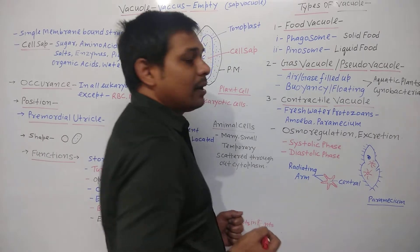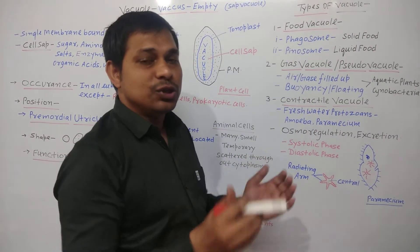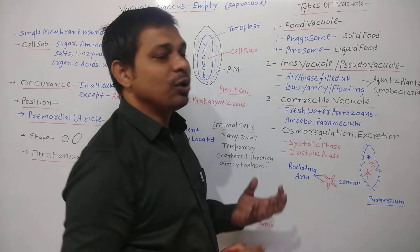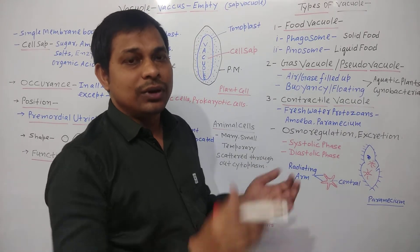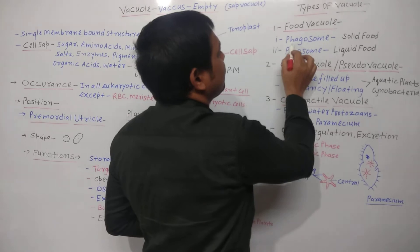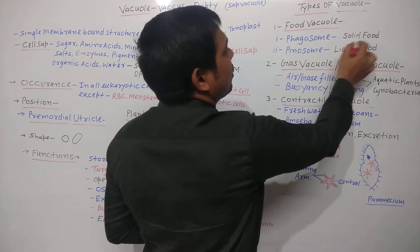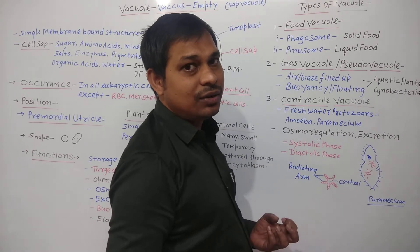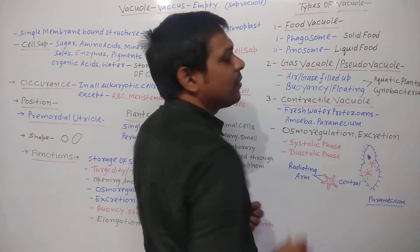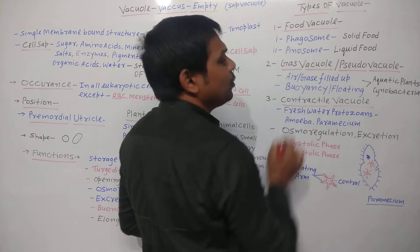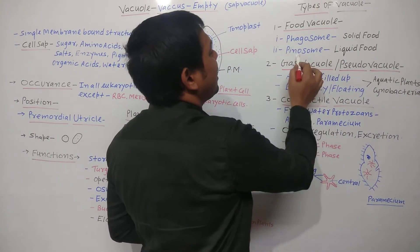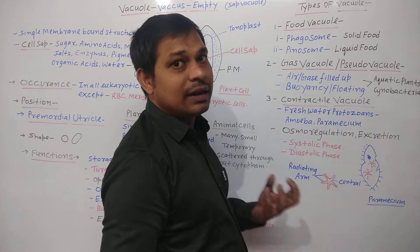Next, we look at the types of vacuoles. First are food vacuoles — when vacuoles store food substances or food particles, they are considered food vacuoles. These are of two types: phagosomes, which store the solid form of undigested food, and pinosomes, which store the liquid form of food.